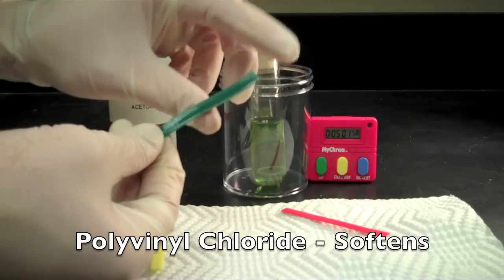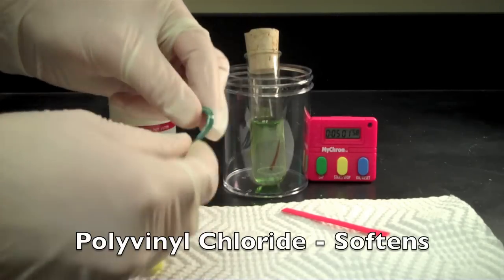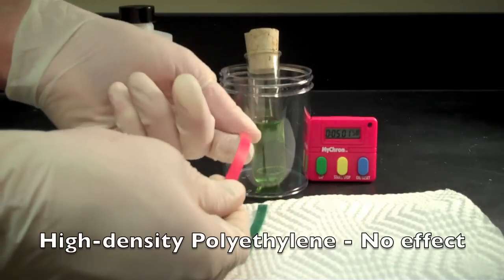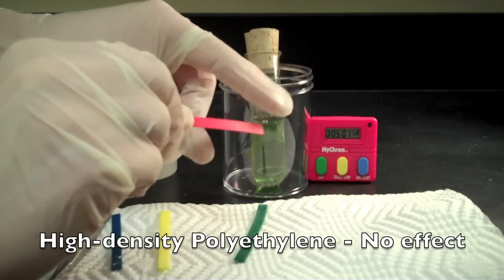The green strip of polyvinyl chloride softened greatly as well. You can see it's more flexible than before. The acetone had no effect on the red strip of high-density polyethylene.